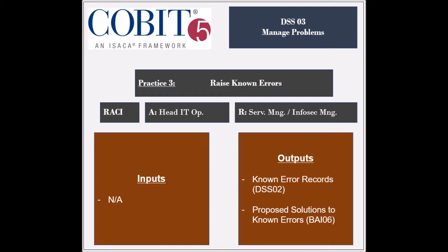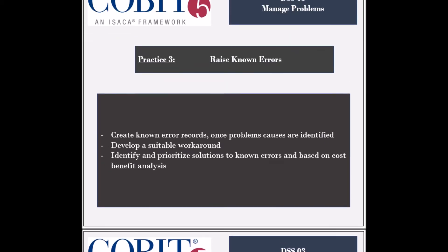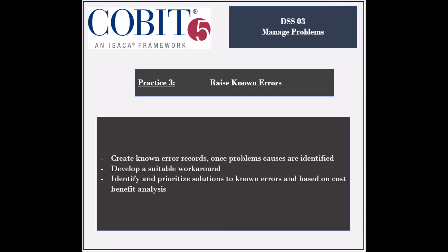The practice receives no inputs, but generates two outputs, which are the known error records to be used by the DSS-II process, and the proposed solutions to known errors to be used by the BAI-6 process. The activities involved in this practice include creating known error records once the problem root causes have been identified.